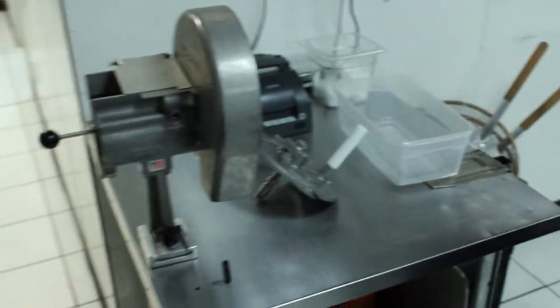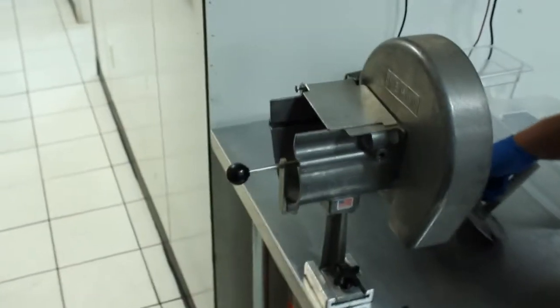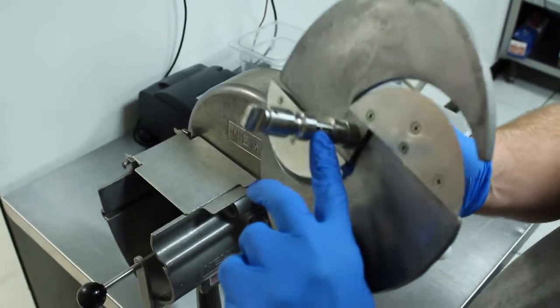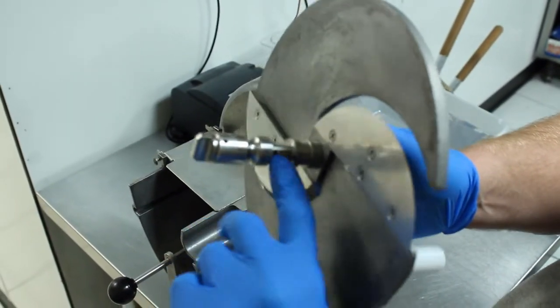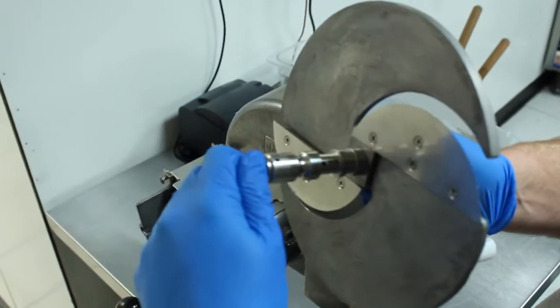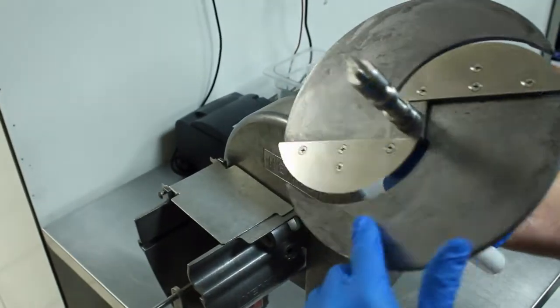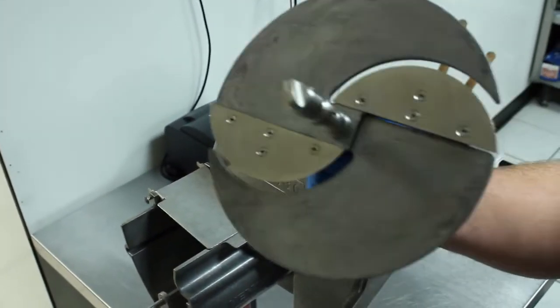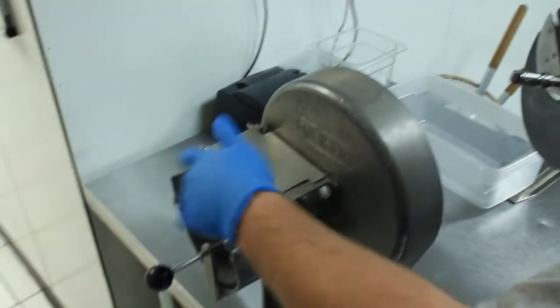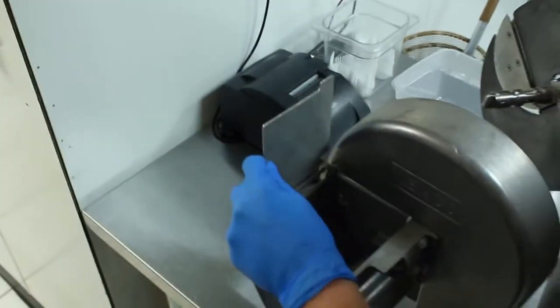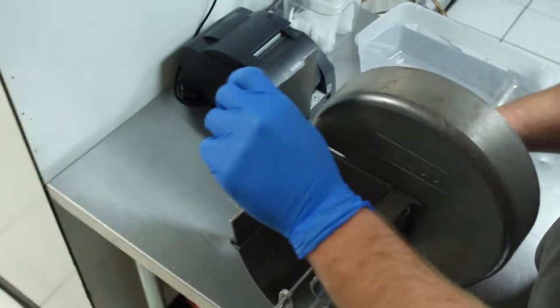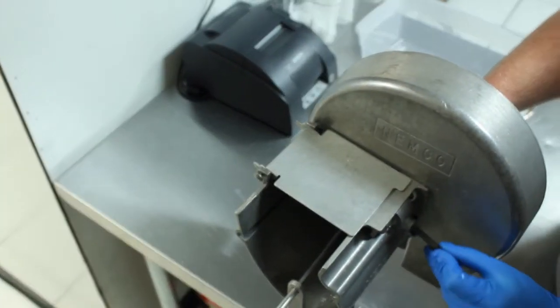Alright, now let's bring it over to the slicer. And we want to have the slicer settings to about the third line right here. This adjusts like this, and this is how you adjust the thickness on the blades. Be careful with these, these things are sharp and they will hurt. Assemble the slicer.